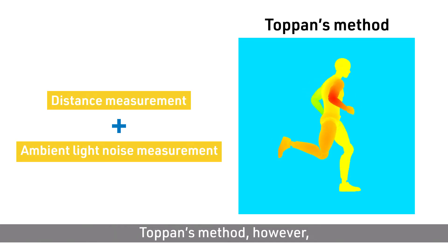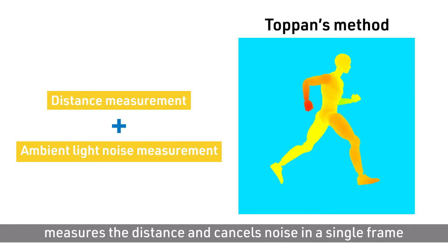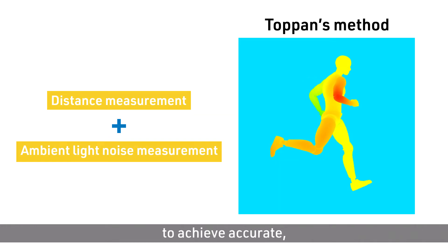Toppan's method, however, measures the distance and cancels noise in a single frame to achieve accurate high-speed detection without any motion blur.